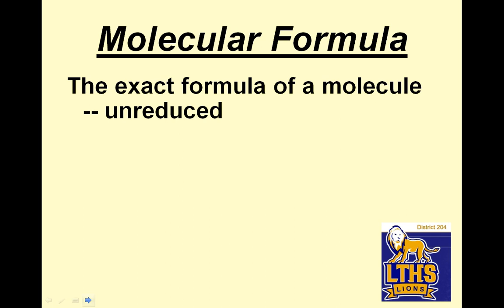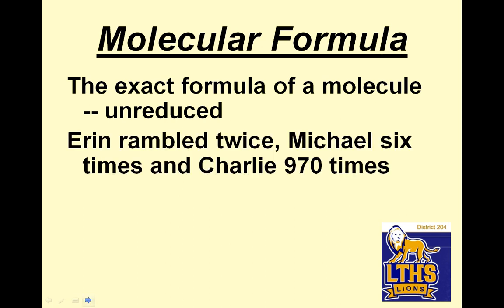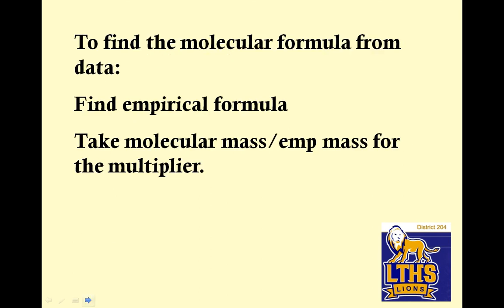The molecular formula is the exact formula of the molecule, unreduced. Aaron rambled twice, Michael rambled 6 times, Charlie rambled 970 times. And that would be 6, 2, and 73. So it's unreduced, although that, I believe, is relatively prime, which would be a bad example. But still. To find the molecular formula from data, find an empirical formula—we just learned how to do that. Take the molecular mass, that means the big mass, divide by the empirical mass. That's the mass of what you just found, for the multiplier.